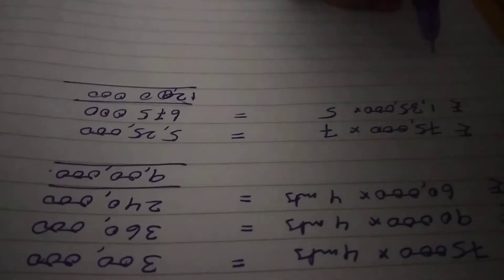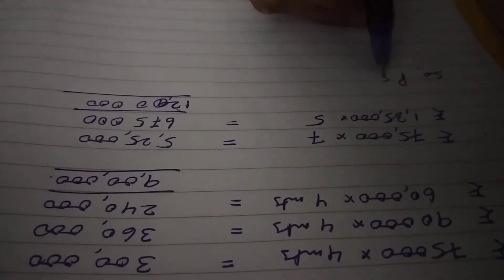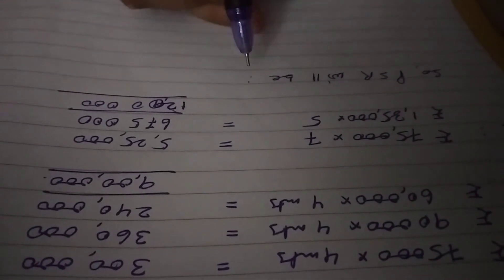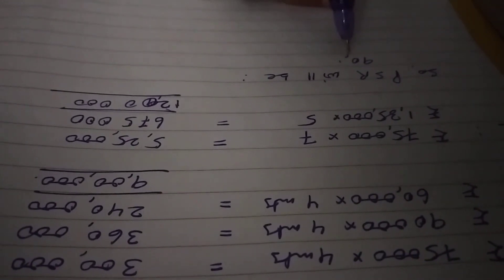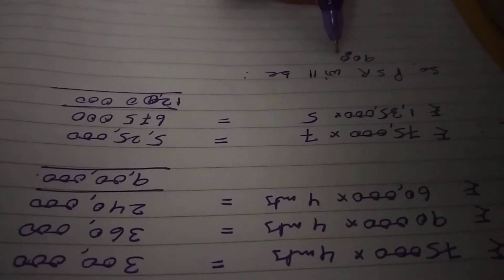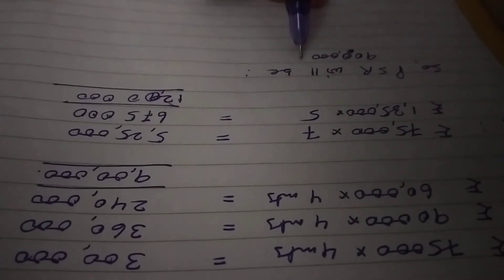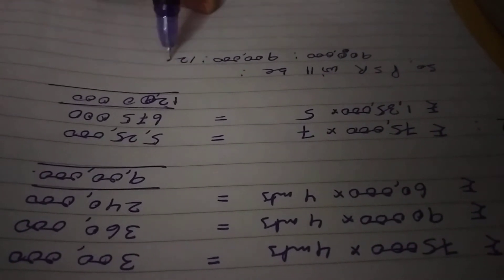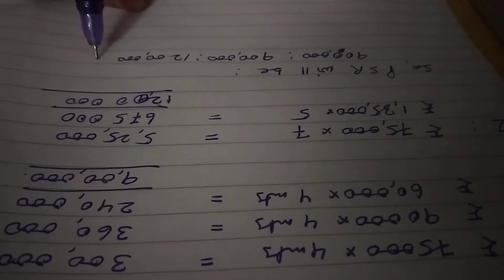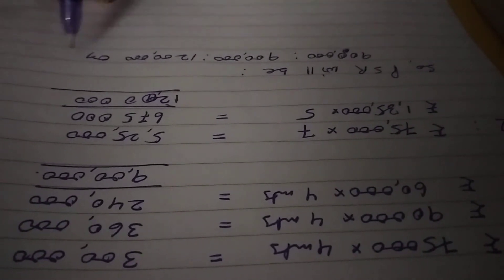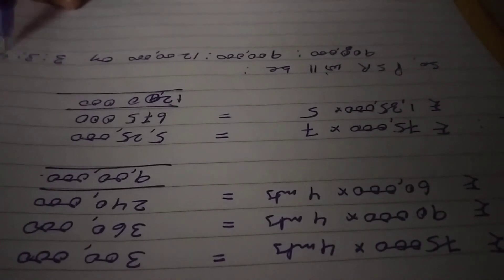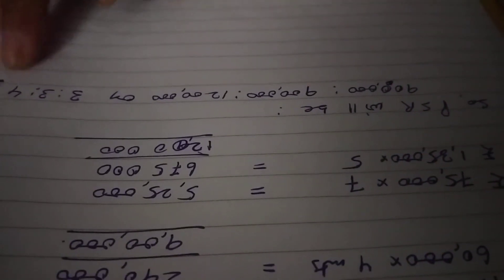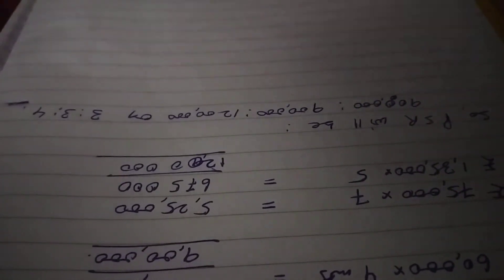So profit sharing ratio will be PSR, 9 lakh is to 9 lakh is to 12 lakh, or 3 is to 3 is to 4. So this is the ratio of effective capital, that is 3 is to 3 is to 4.